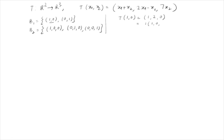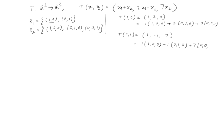T(1,0) = (1,2,0) = 1·(1,0,0) + 2·(0,1,0) + 0·(0,0,1). So the coordinates of T(1,0) are 1, 2, and 0, which form the first column of the matrix. Again, T(0,1) = (1, −1, 7) = 1·(1,0,0) + (−1)·(0,1,0) + 7·(0,0,1). So the coordinates of this vector are 1, −1, and 7.